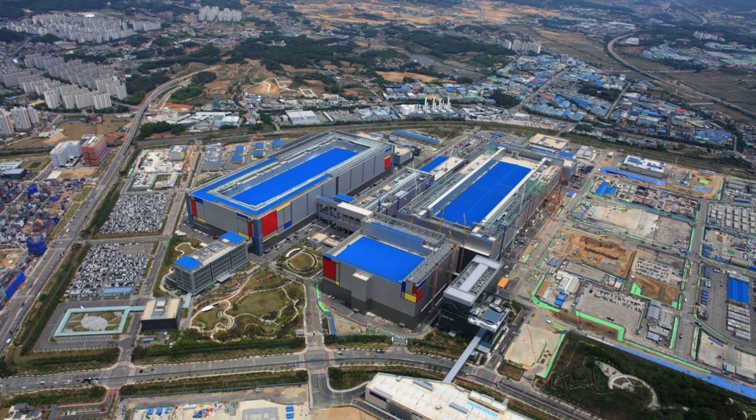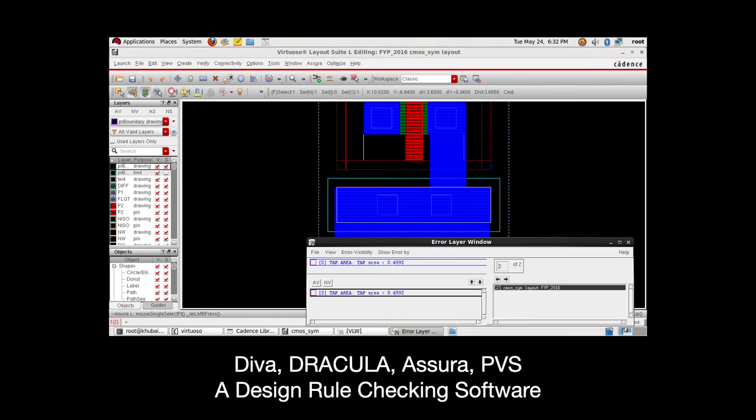EDA software is heavily involved in every one of these stages. Even a company like TSMC or Samsung uses EDA software to check a newly arrived design to make sure it is compatible with all of their design rules. Such testing or design rule checking is an especially big deal. An error here can cost millions of dollars if it slips into the fabrication stage.